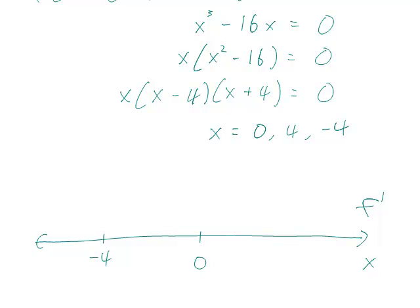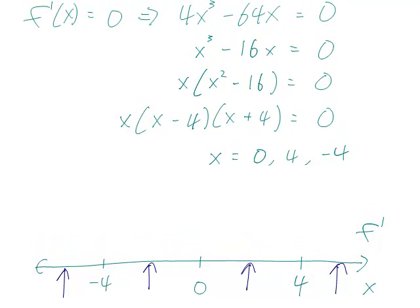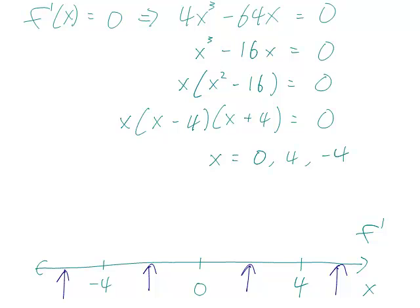And it's kind of like a number line except you write in the critical numbers, the critical points, critical values, whatever you want to call them. And then for each interval defined by these critical numbers, you want to plug in a value from each of these intervals. And you plug it into f prime. So let me scroll up a bit. Remember f prime is 4x cubed minus 64x.